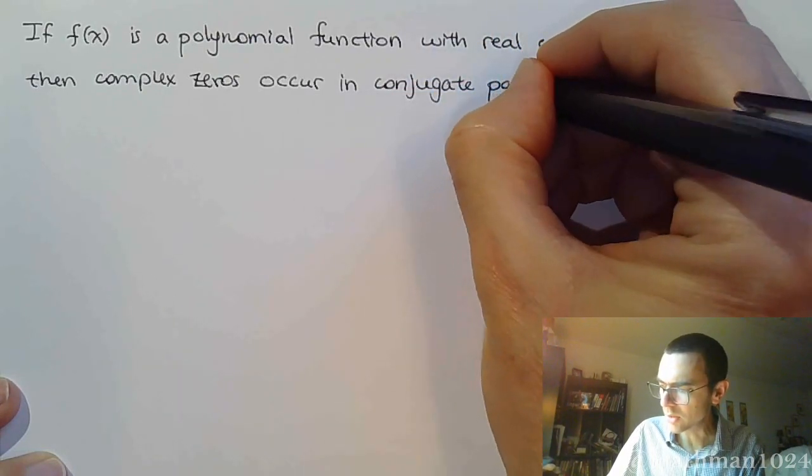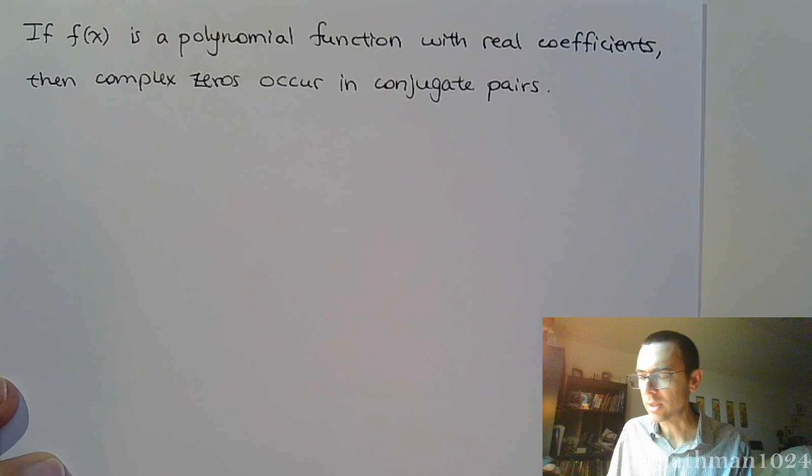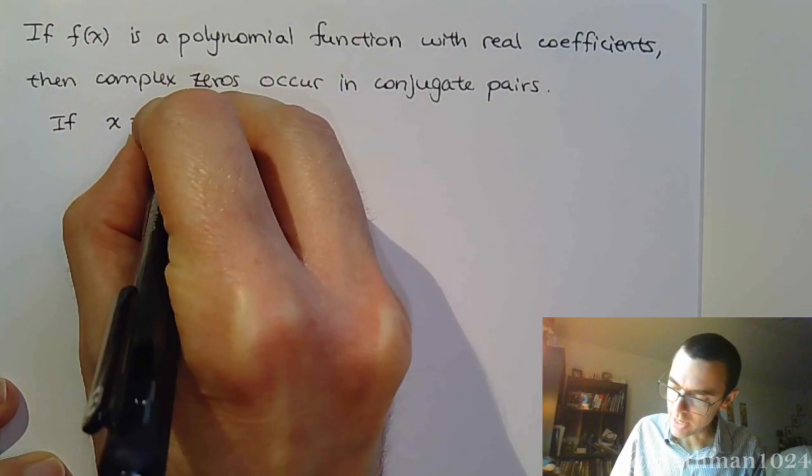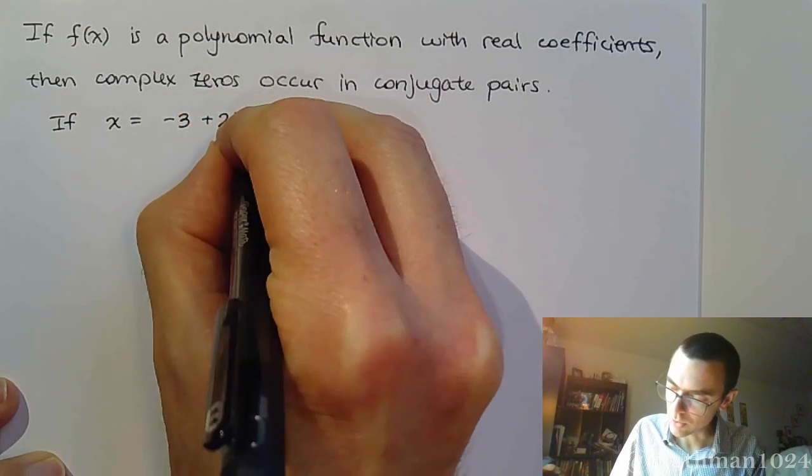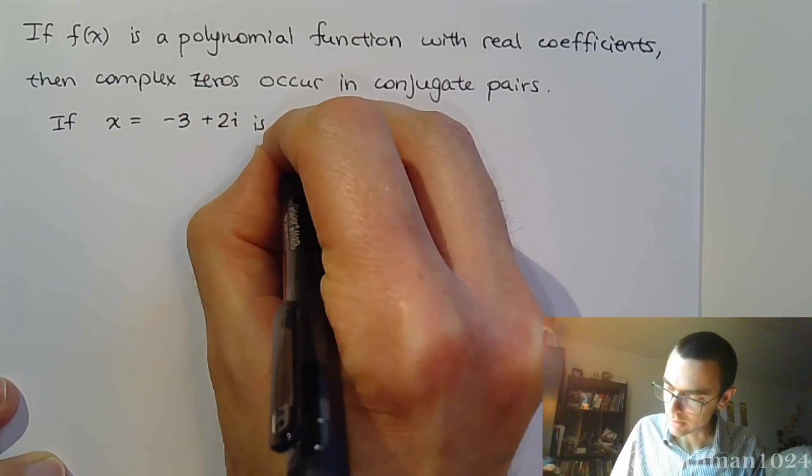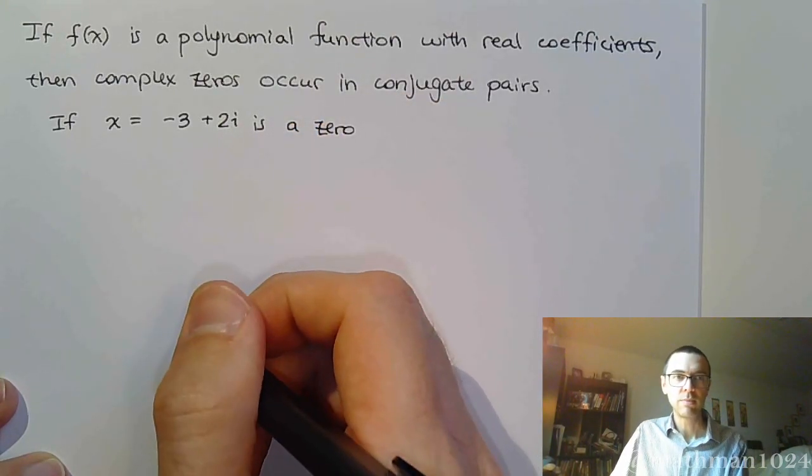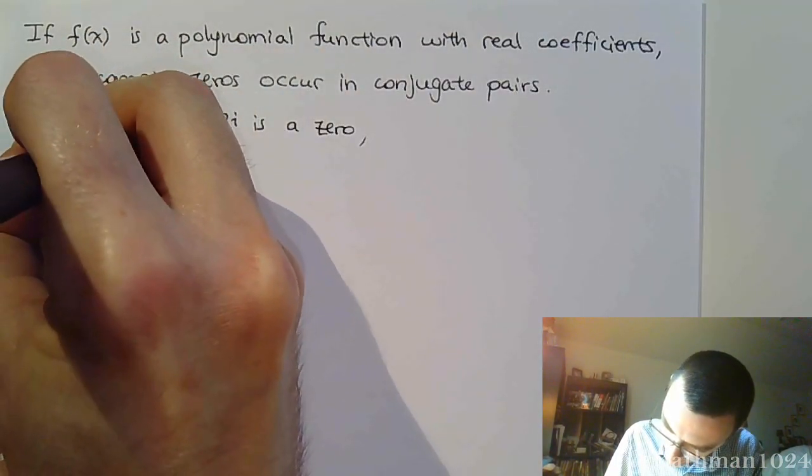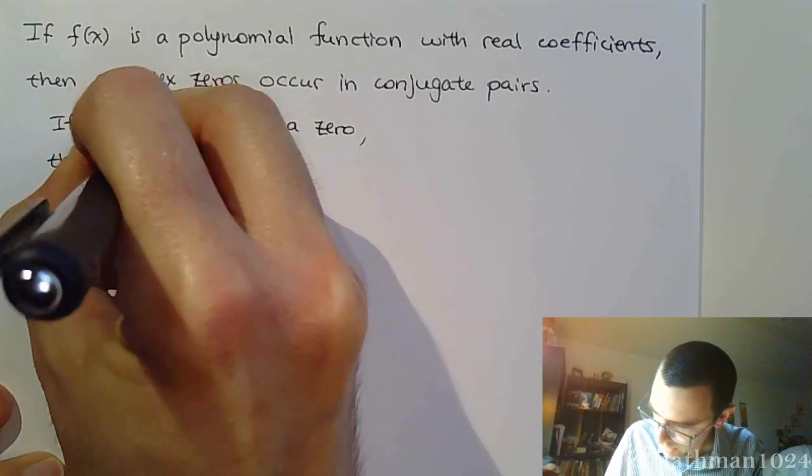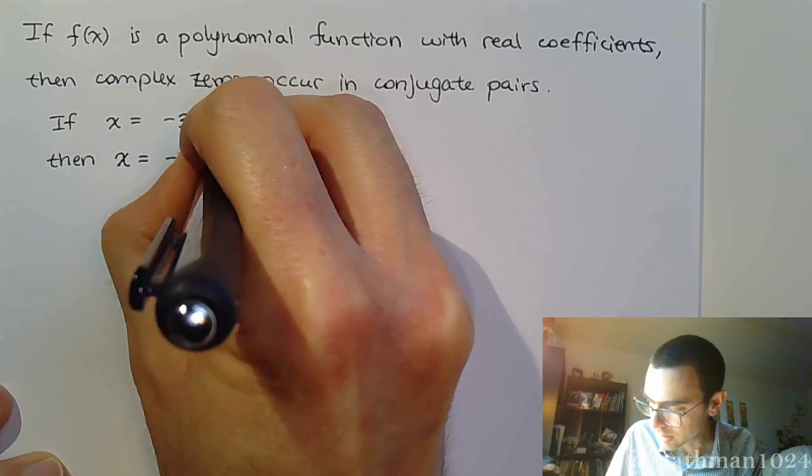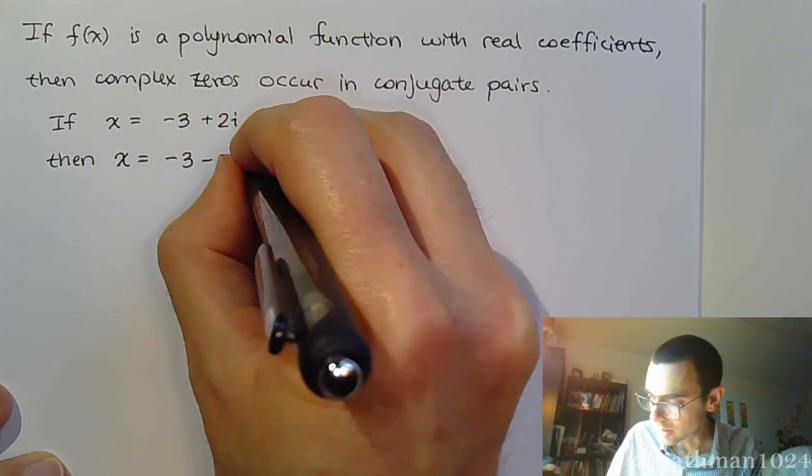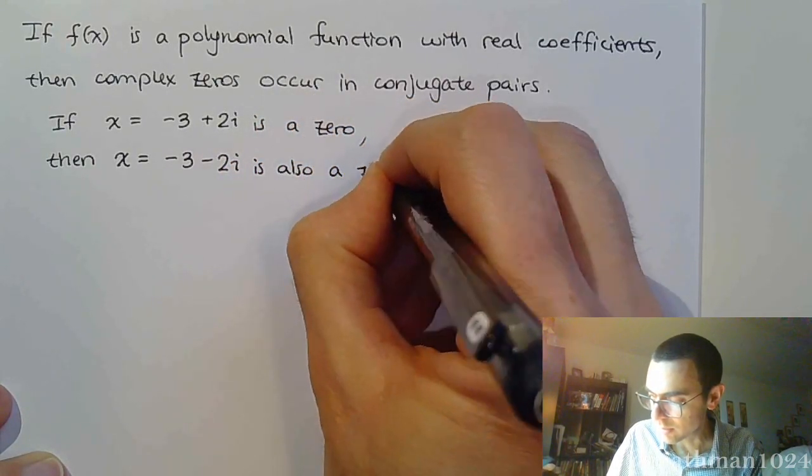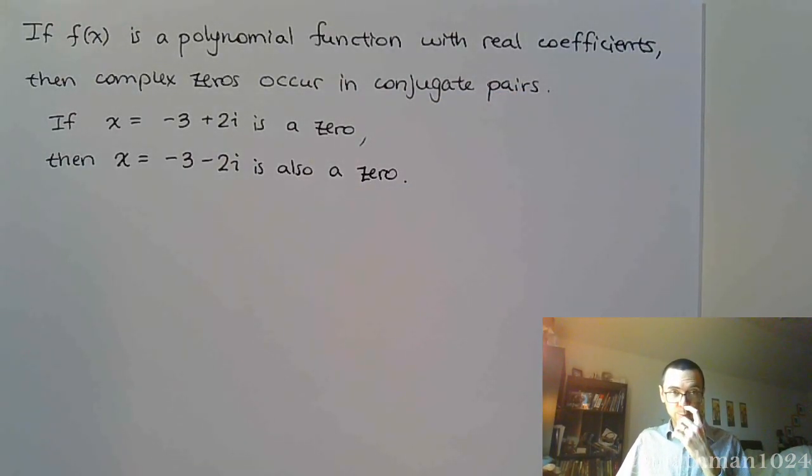And the conjugate pairs is just what I was talking about with the plus or minus. It basically says this: if x equals -3 + 2i is a zero, then x equals -3 - 2i is also a zero. These guys are going to occur in conjugate pairs.